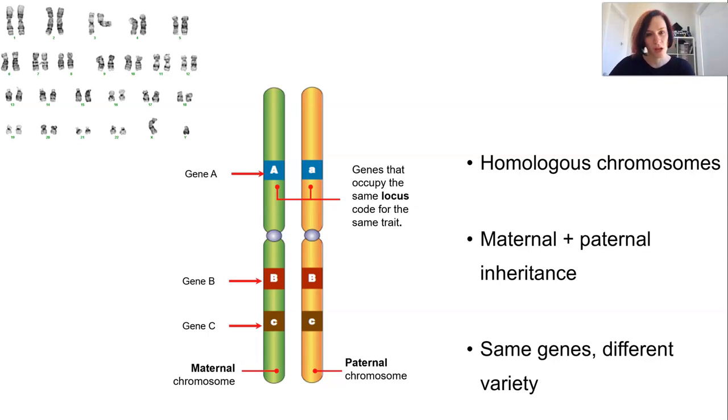The principle of meiosis relies on the idea that we are passing along only one of these pairs of homologous chromosomes, but it must be one from each pair.